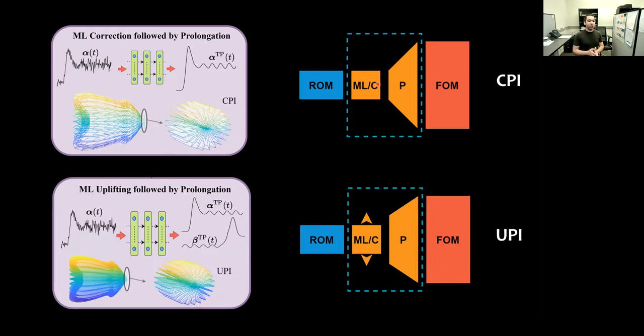Finally, we propose machine learning uplifting followed by prolongation, or UPI. In this case, in addition to the correction in phi space, we also use the neural network capabilities to reveal some of the non-linear correlations between different subspaces. This will eventually provide some super-resolution effect. Here we solve our ROM in the phi space for alpha. But at the end, our solution will have information from phi and psi. So we have alpha and beta.